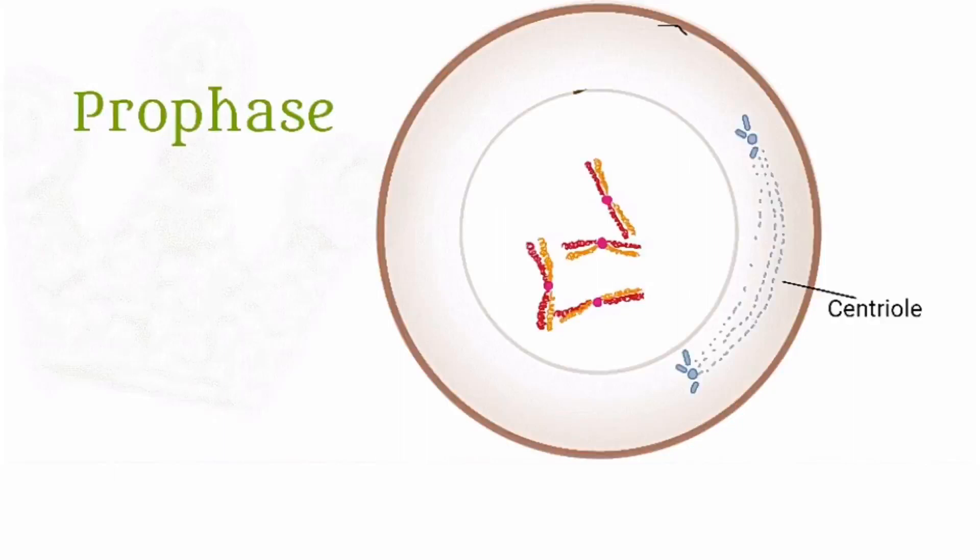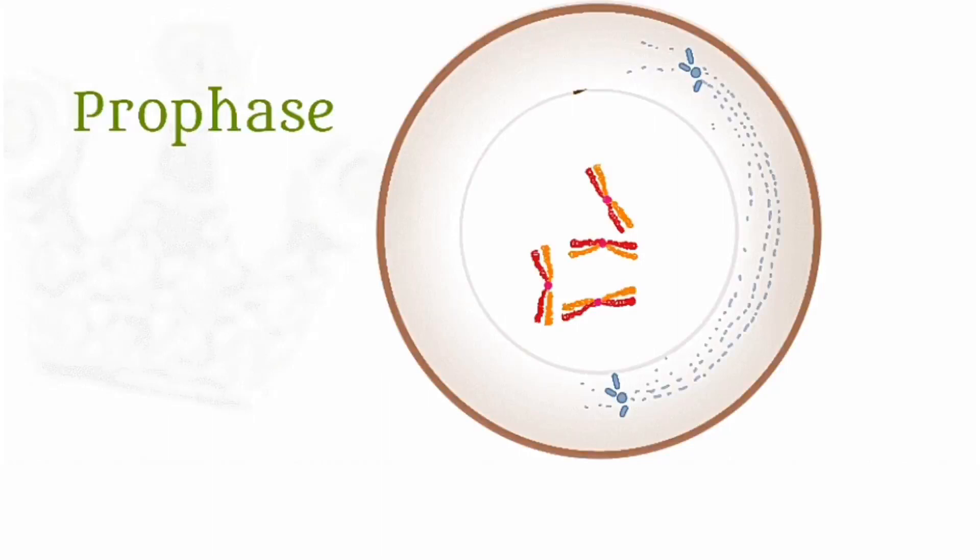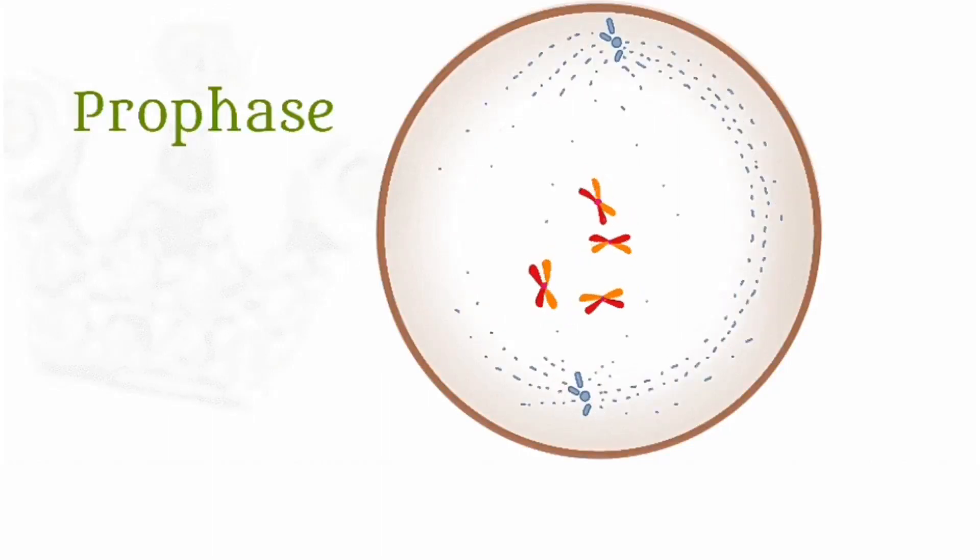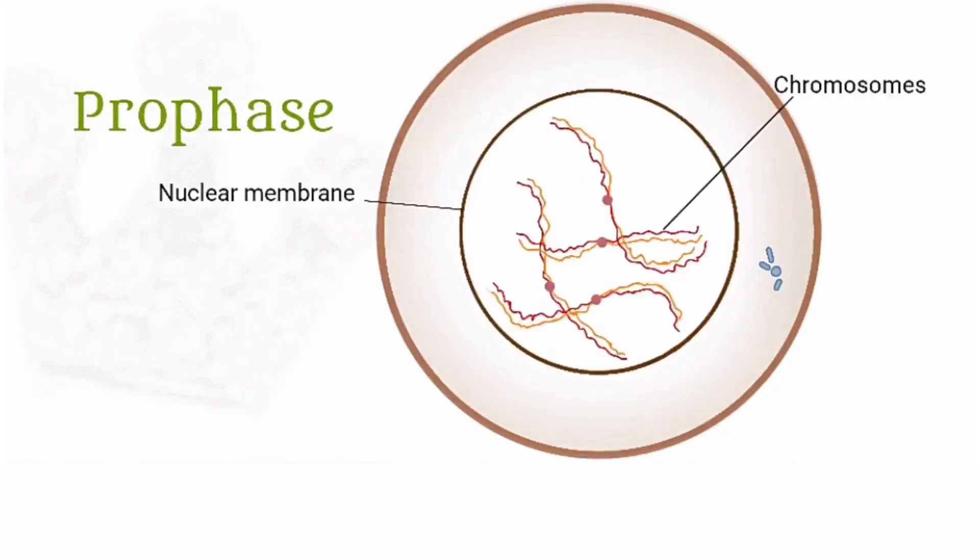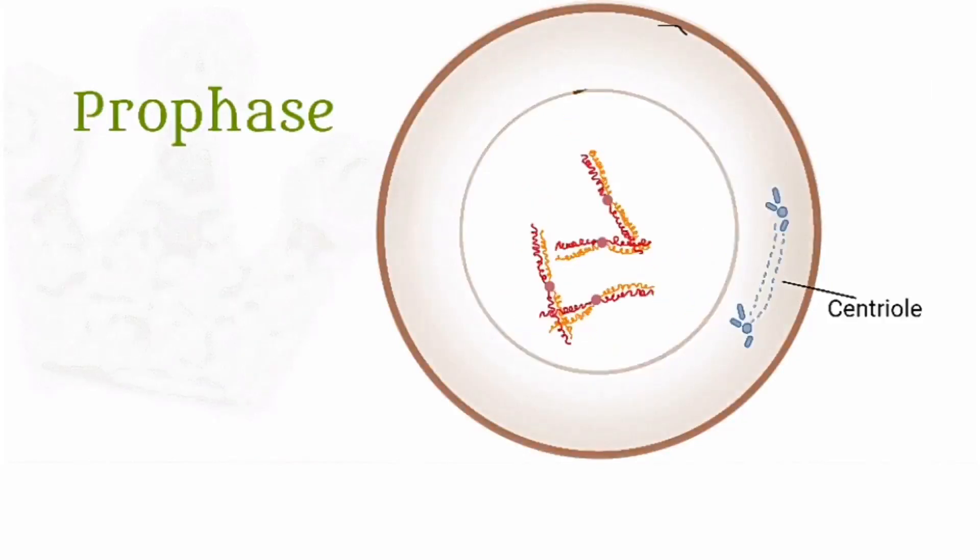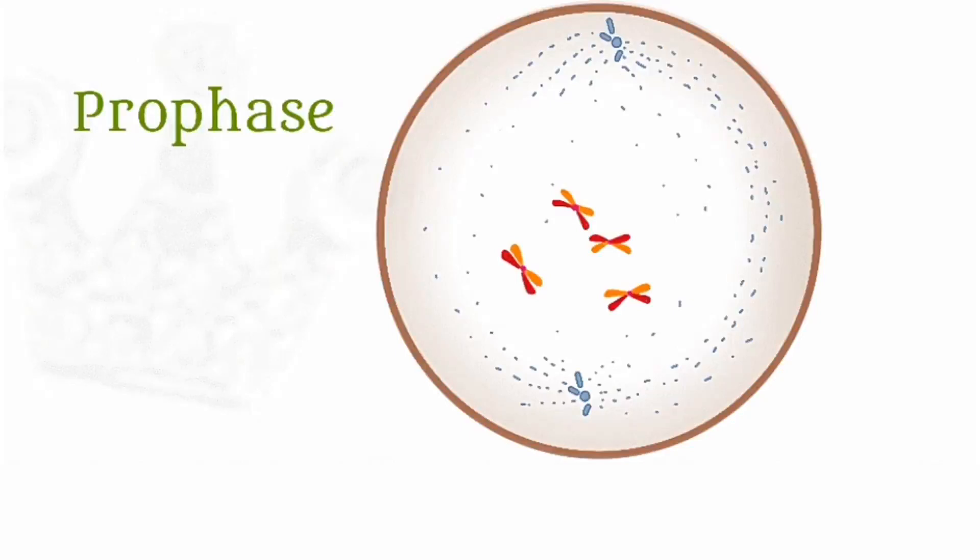In the meantime, we also have the centrioles separating and reaching the different poles of the cell, and the nuclear membrane disappears. To repeat, the events of prophase are: coiling of the chromosome, separation of centrioles and migration to poles, and disappearance of the nuclear membrane. By the end of prophase, we also have spindle formation.